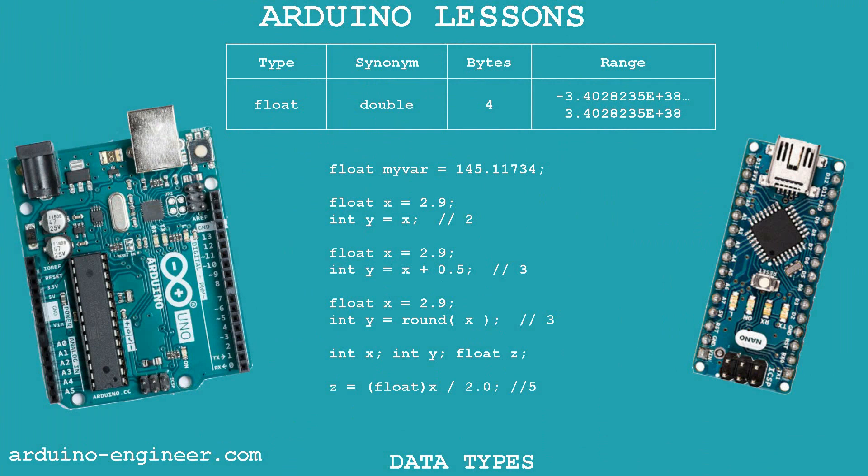Float is a type of floating point variable, or real number. Float allows you to receive and store data values with an accuracy of 6-7 decimal places and occupies 32 bits of memory. It is used to store and display the value of physical quantities, the result of mathematical calculations, arguments of mathematical formulas, mathematical constants, and so on. Pay attention to the examples from the Arduino documentation on converting an integer into a real float – there are some nuances here.